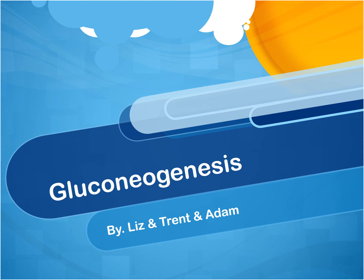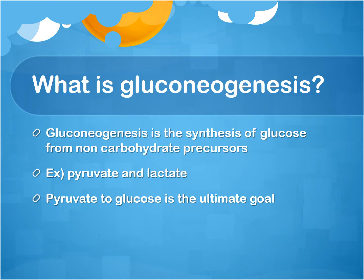Today we're going to be talking about all the details of gluconeogenesis that occurs in our body. Gluconeogenesis is the synthesis of glucose from non-carbohydrate precursors. Some examples are pyruvate and lactate. The main goal here is to produce glucose and release it into our bloodstream when we need it.